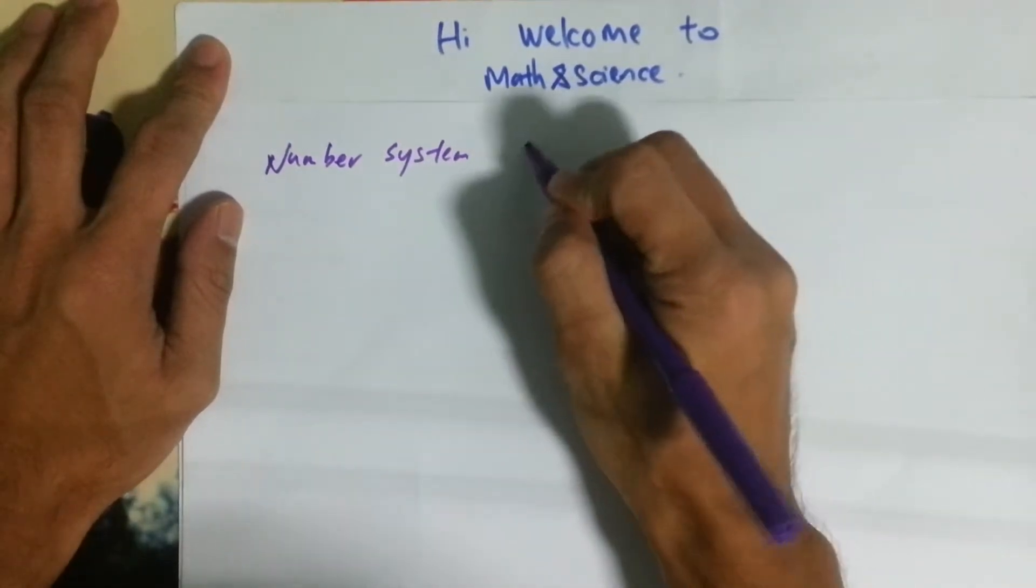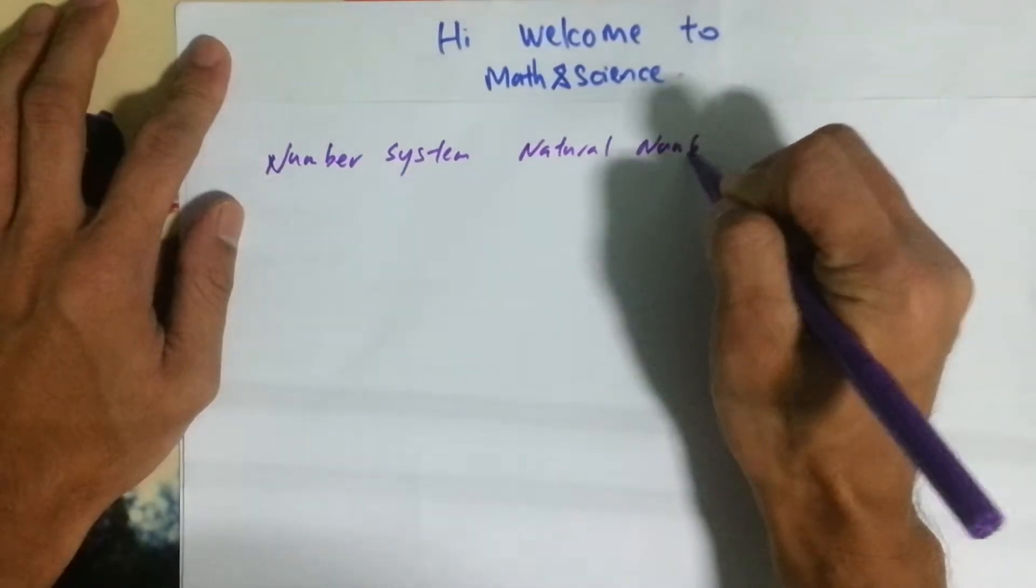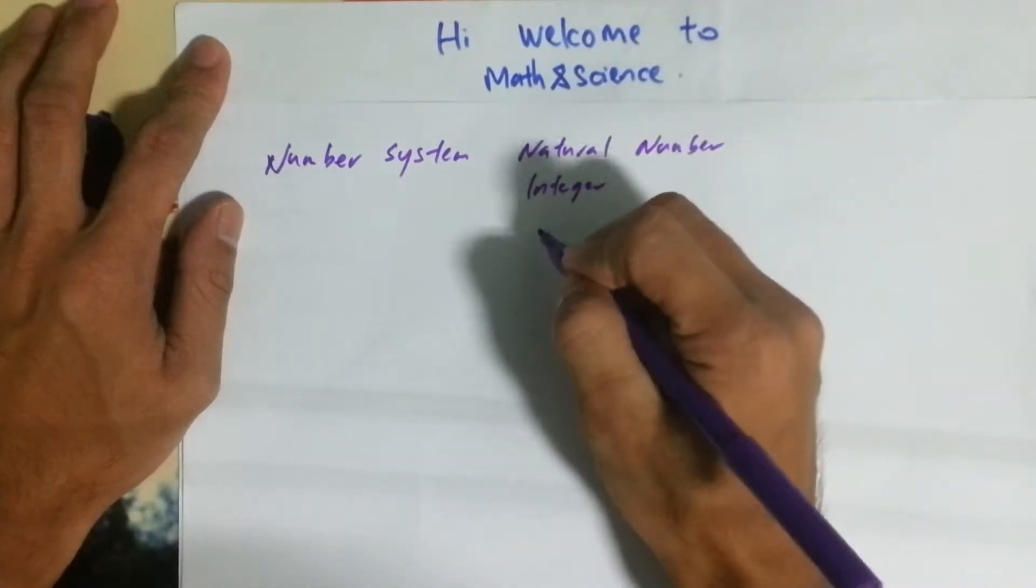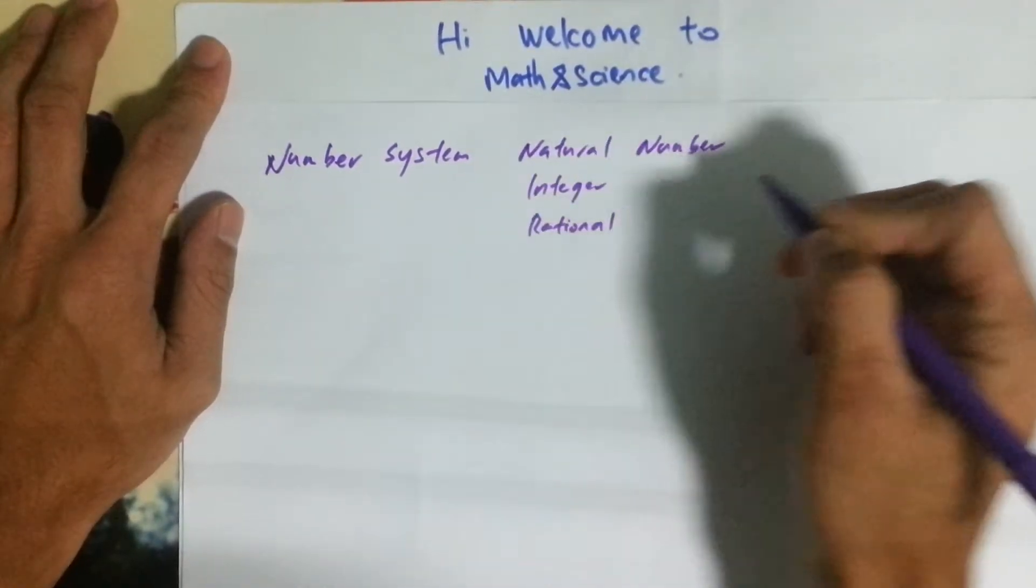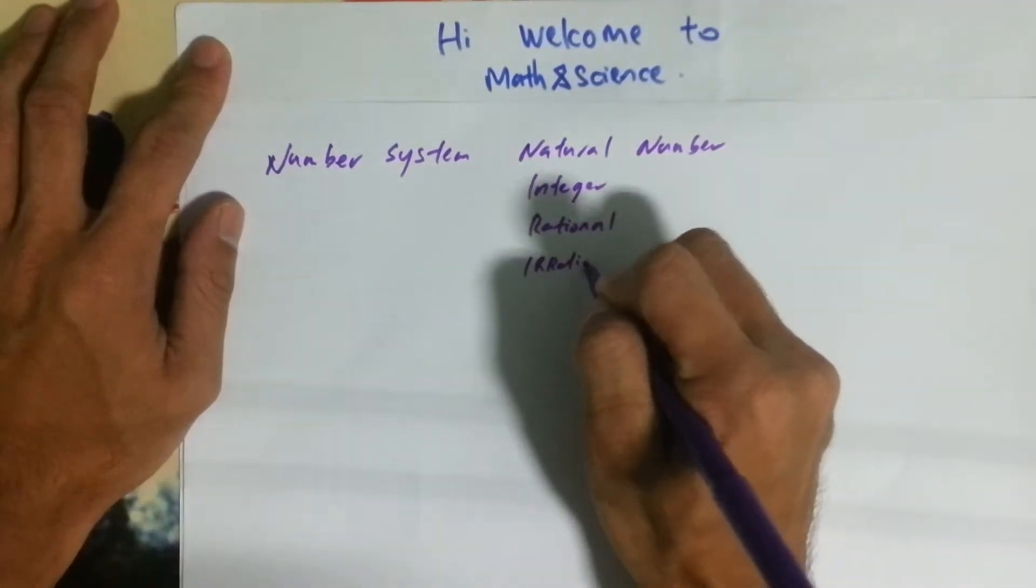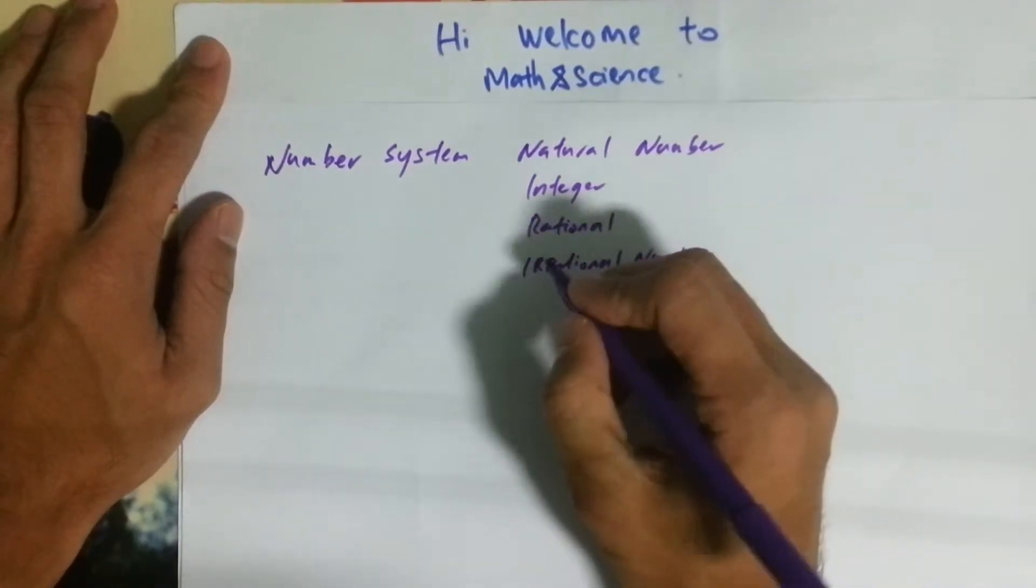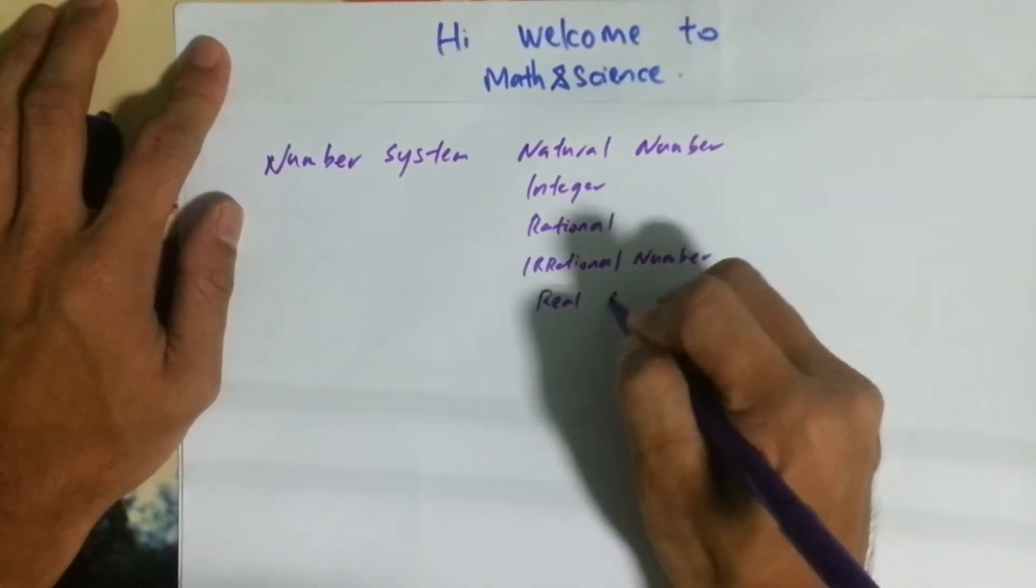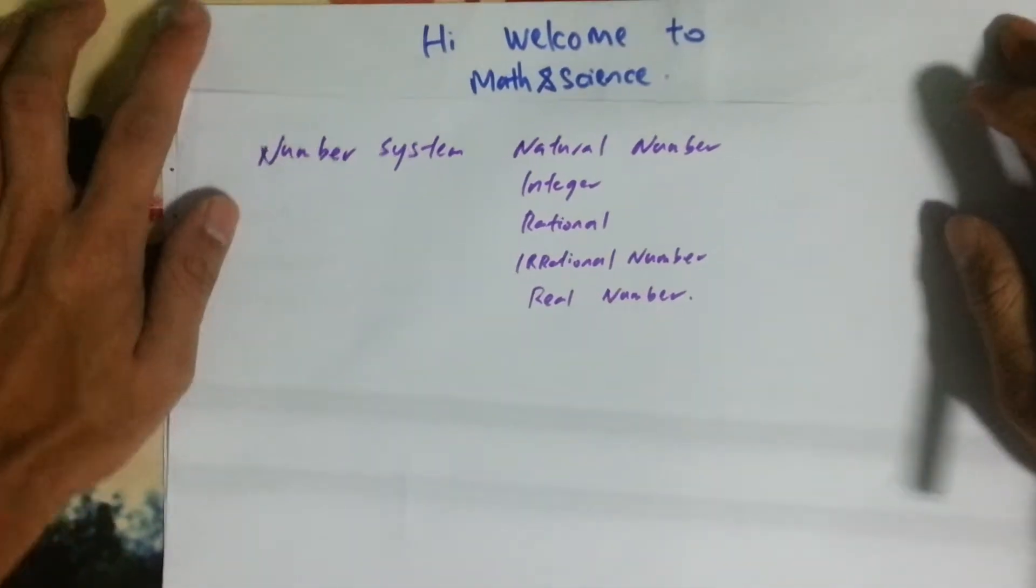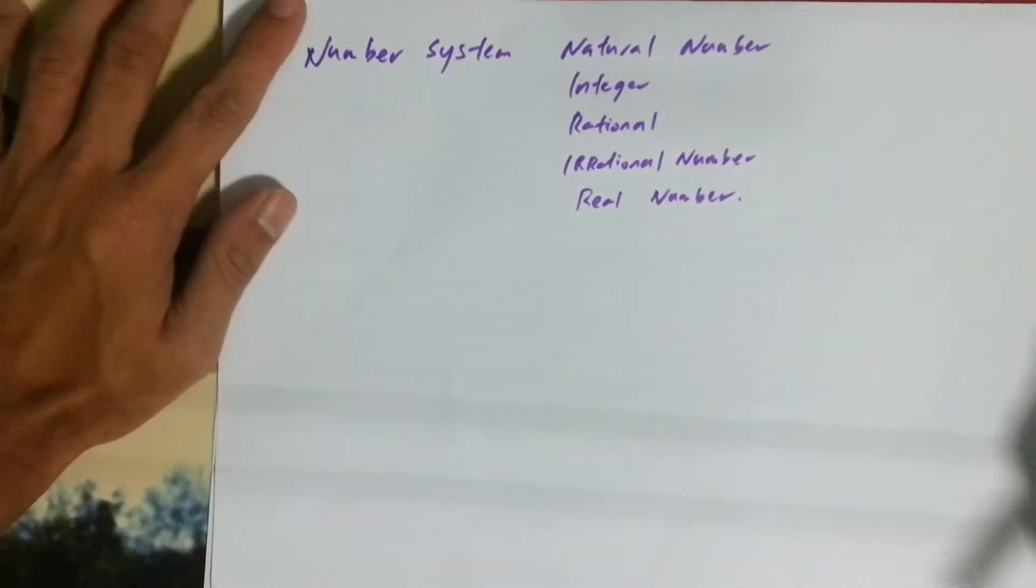Number systems consist of natural numbers, integers, rational numbers, irrational numbers, and finally real numbers. So what are all of these?